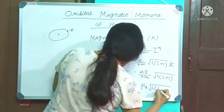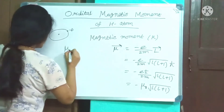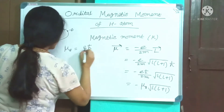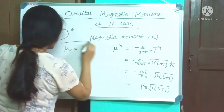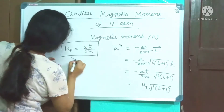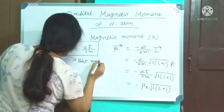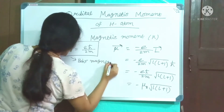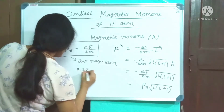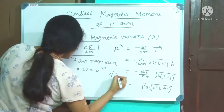This gives μ equals minus μ_B × √(L(L+1)), where μ_B equals eħ/2m is called the Bohr magneton. The Bohr magneton has the value 9.27 × 10⁻²⁴ joule per tesla.